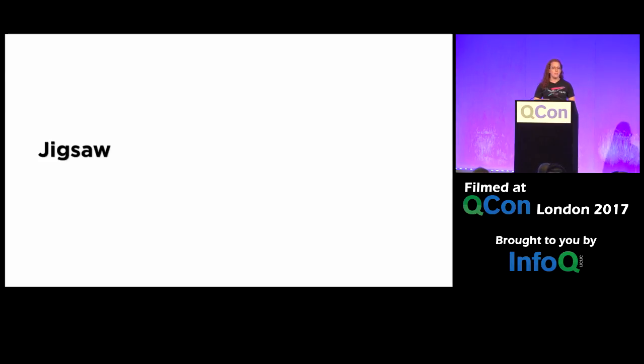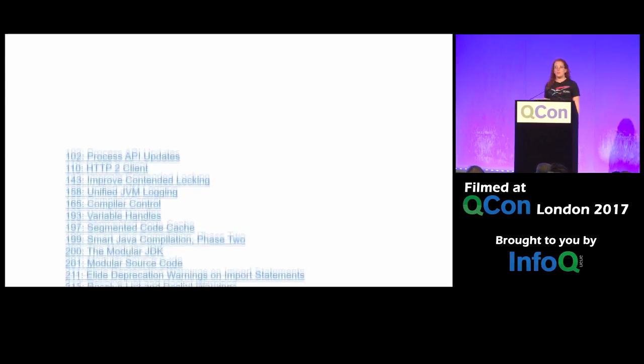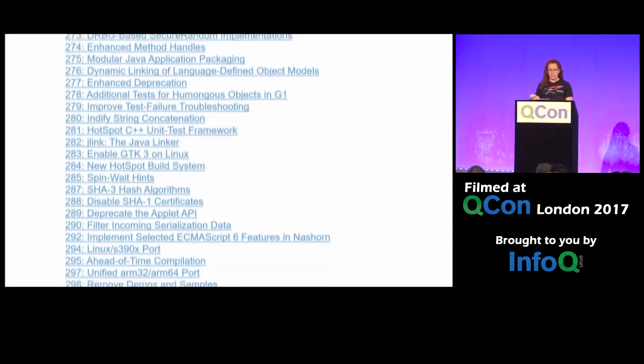Whenever anyone talks about Java 9, they can't help but talk about Jigsaw, because this is the big thing — it's been a work in progress for about five million years, and we're eventually going to get it in Java 9. A bunch of people are talking about the REPL — read eval print loop — the ability to try out Java statements on the command line, which is not really a way that Java developers are used to working. Java 9 is now sort of feature complete.